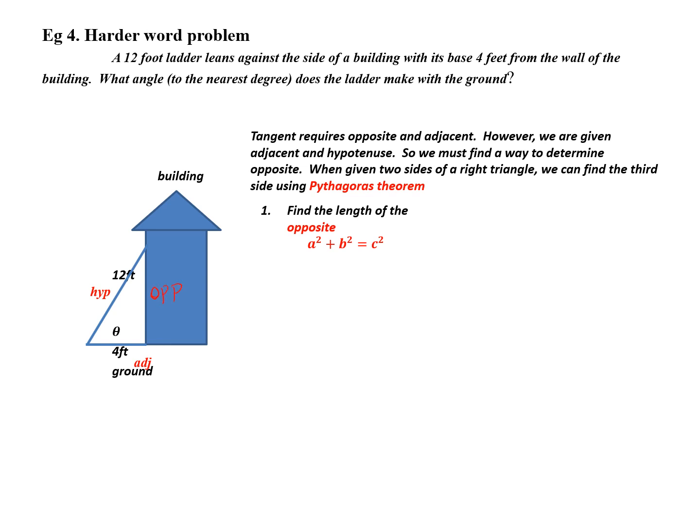Now this produces a problem because tangent ratio works with opposite and adjacent. So unless I can find opposite, I can't answer this question. A method you were taught last year to find a missing side for a right triangle when given the other two sides is called Pythagorean theorem. So what is Pythagorean theorem? A squared plus B squared equals C squared. So at this point, I am going to use this to find the opposite.